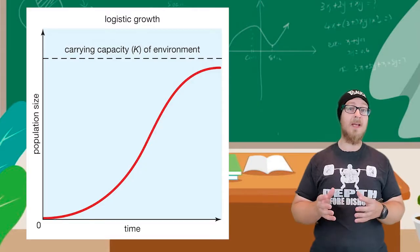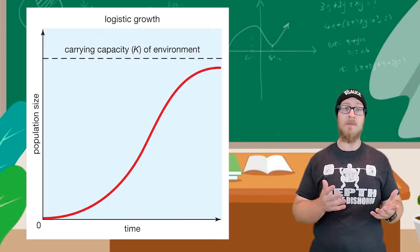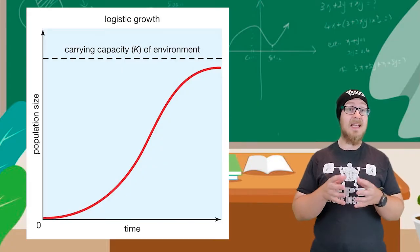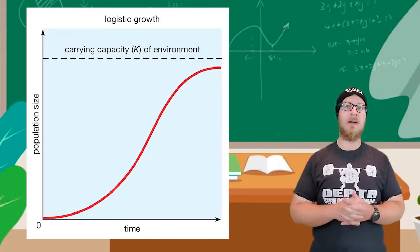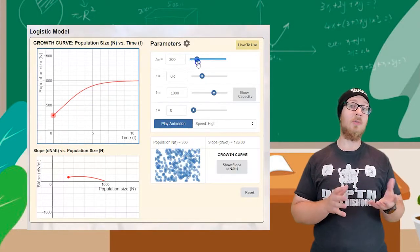This is a reflection of density-dependent factors exerting their influence on the growth rate of the population as its density becomes closer packed. The same trends in growth rate apply to logistic growth.